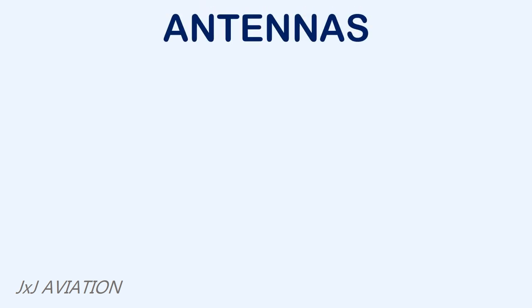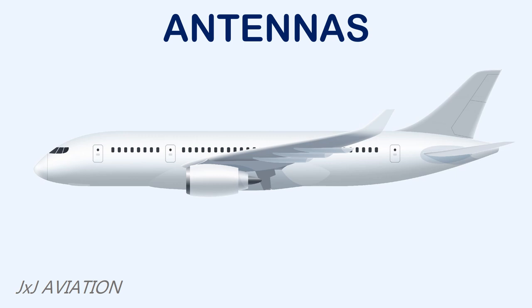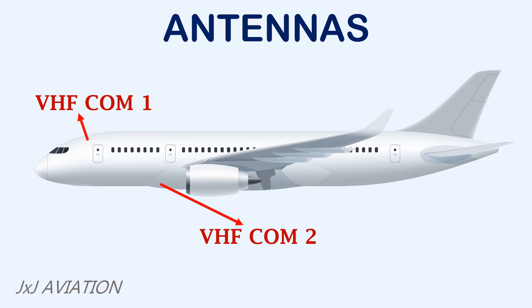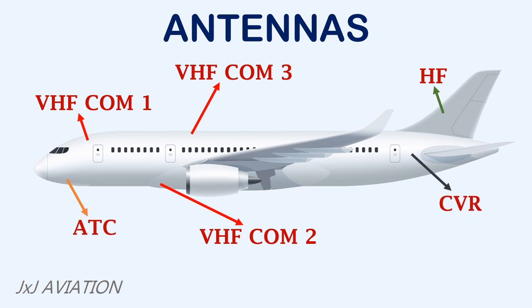For the communication system to send or receive voice or data signals, several antennas are installed on the aircraft. The aircraft will have VHF communication 1, which is normally used for voice communication, and VHF communication 2, which is kept on standby and used for monitoring purposes only. The aircraft may have VHF communication 3, which is used along with HF for data transmission for ACARS. The aircraft will also have a transponder or ATC and a cockpit voice recorder or CVR installed at the tail section. For satellite communication, a SATCOM may be installed on some aircraft.